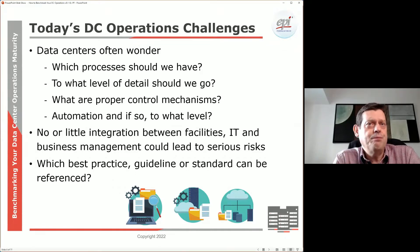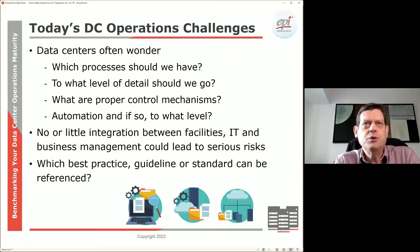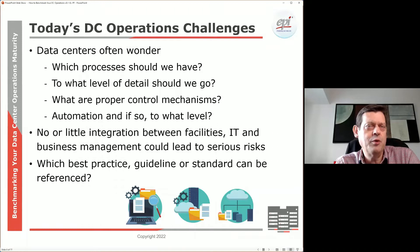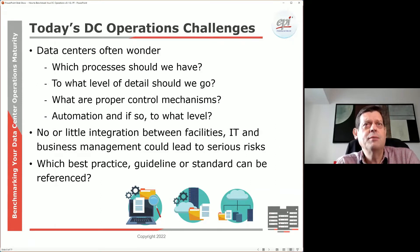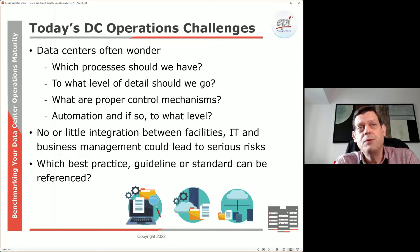And of course, automation — especially now where everybody talks about AI and assisted support, the whole mechanism around automation is there. But what do we automate? What can we automate? What level of control are we willing to give away to machines that make decisions for us? And then we have the good old internal battles — the business, IT, and data center facility may have different views, different guidelines, and different priorities. We need to make sure that is well balanced.